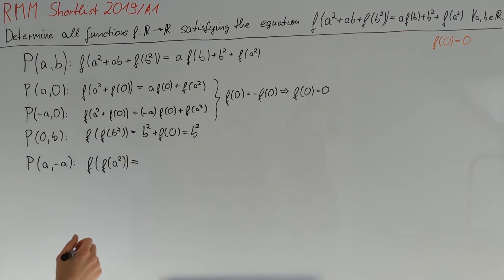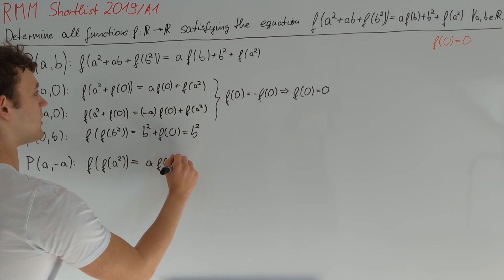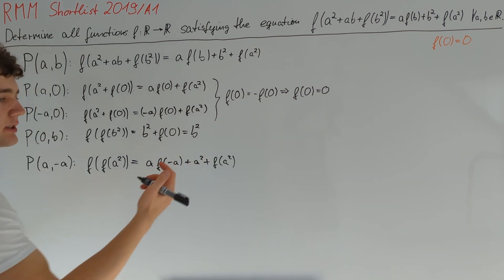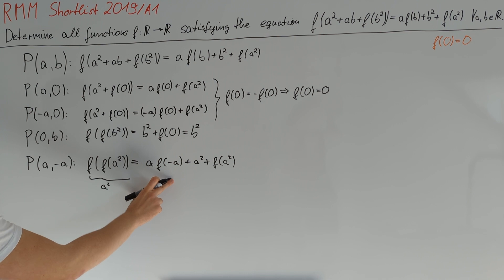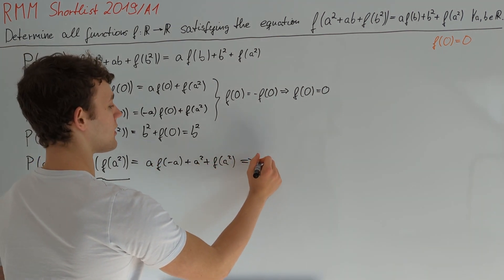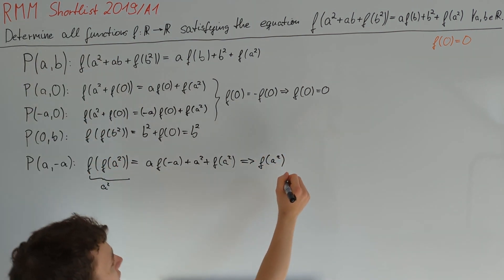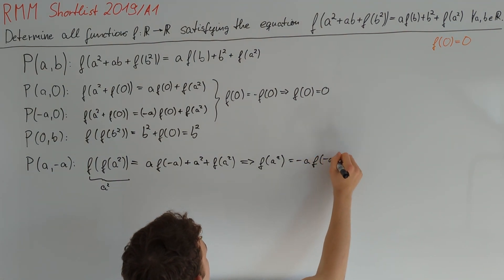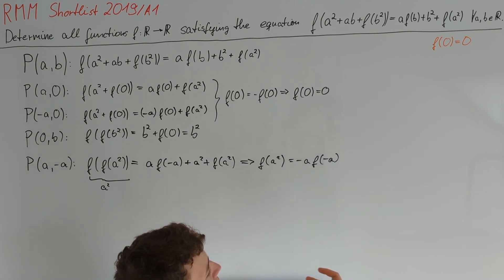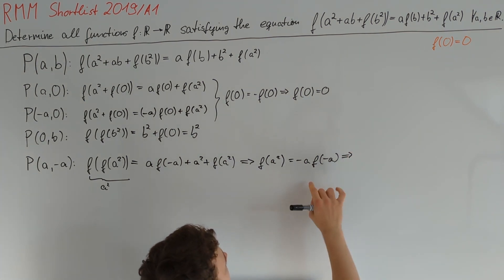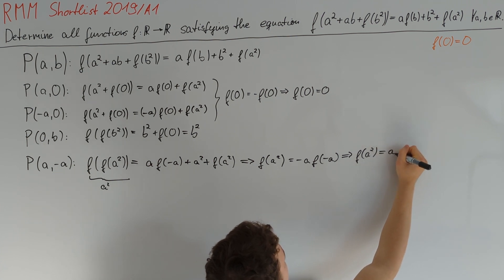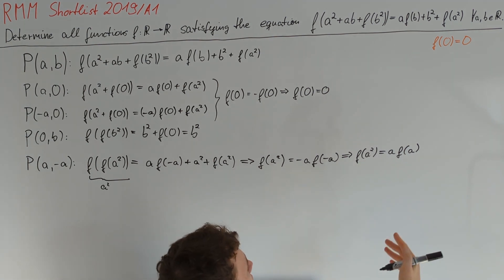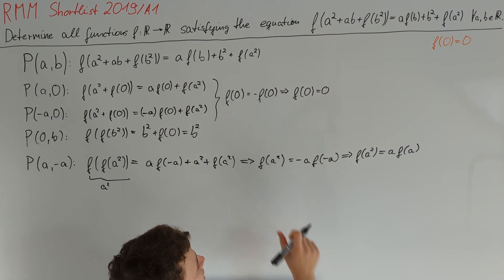The right side gives us a·f(−a) + a² + f(a²). Since we know the left side equals a², we can subtract a² on both sides and also subtract a·f(−a) to obtain f(a²) = −a·f(−a). Since (−a)² = a², we can plug in −a for a, which gives f(a²) = a·f(a). This is very useful, and we can see we have equal left sides in both equations.